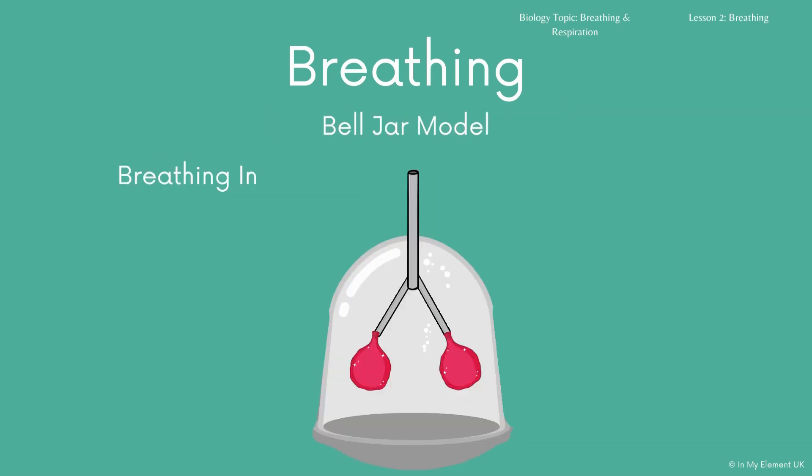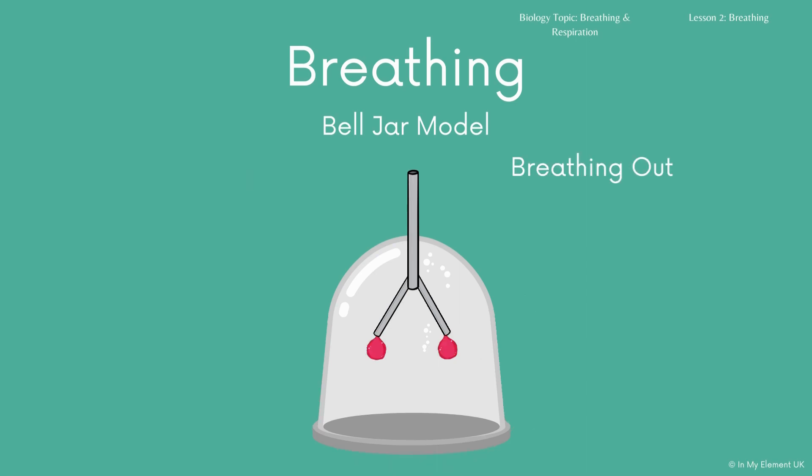We can also represent this with the bell jar model. This is a glass jar with tubing and balloons on it, and then a rubber sheet at the bottom. This image represents what you would see if you are breathing in — the balloons are inflated and the diaphragm, the rubber sheet, has moved down. When you breathe out, the rubber sheet has gone back up and the balloons have deflated, so the lungs have a lower volume.